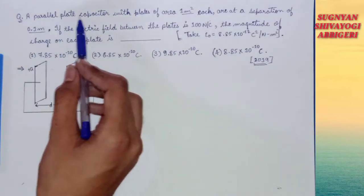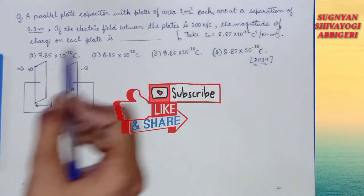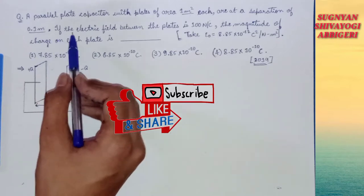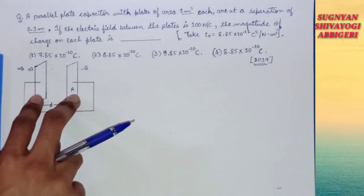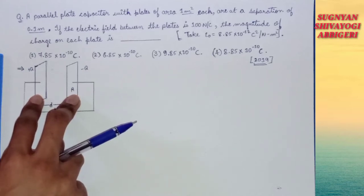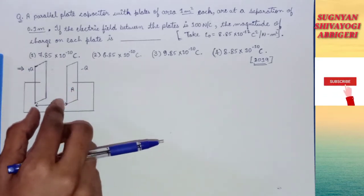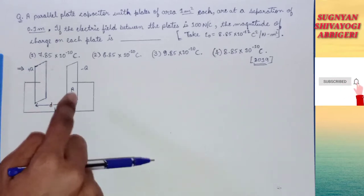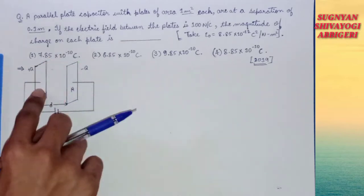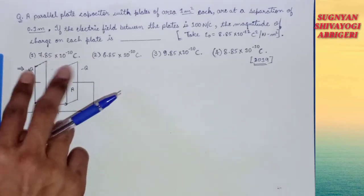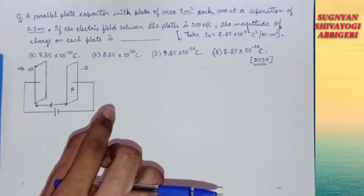A parallel plate capacitor with plates of area 1 meter square each are at a separation of 0.1 meter. A parallel plate capacitor means we take two plates which are rectangular or square in shape, kept at some separation, connected to a battery to complete the circuit. These two plates combined form a parallel plate capacitor.